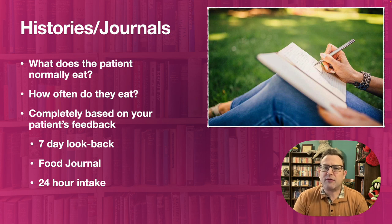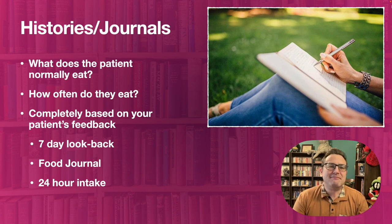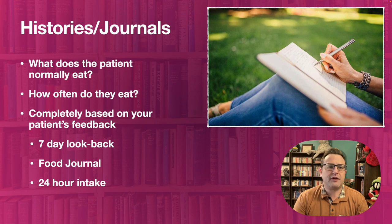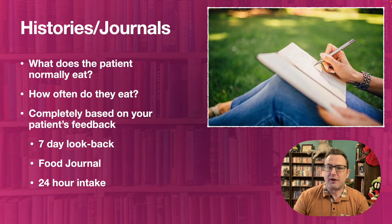The way to get that information — essentially what we have to do is ask questions. That's the only tool we have. This is typically done through histories or journal tools. So we're asking: what does the patient normally eat? How often do they eat that? These break down into three basic types: a seven-day look back, a food journal, or a 24-hour intake.